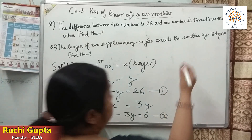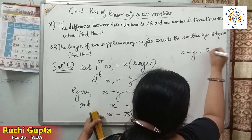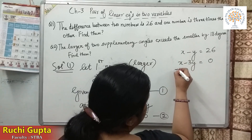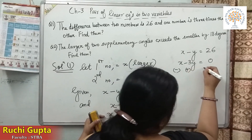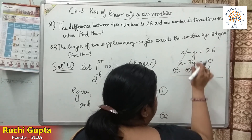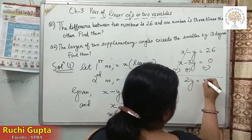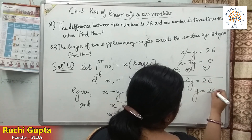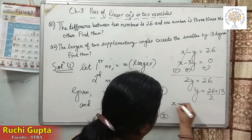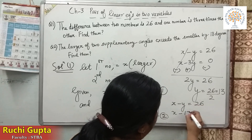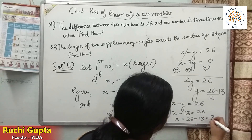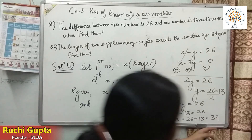Now I am solving these two equations by the elimination method. The first equation is X minus Y equals 26 and the second is X equals 3Y, or X minus 3Y equals 0. To eliminate X, subtract the second equation from the first. X cancels with X. Minus Y minus minus 3Y gives 2Y, and 26 minus 0 is 26. So Y equals 26 divided by 2, which is 13. Substituting Y equals 13 into equation 1, X equals 26 plus 13, which is 39.